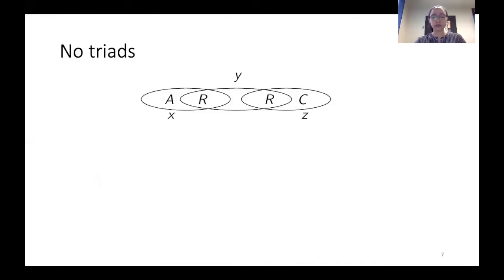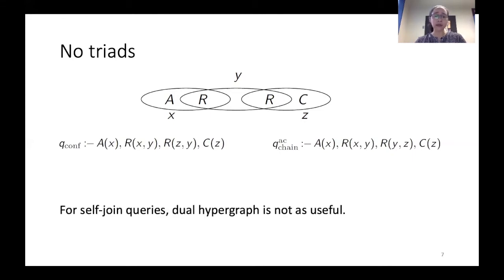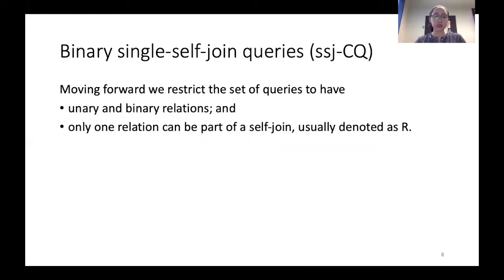Before defining these structures, I want to talk about the representation. We have been representing queries by their dual hypergraph, but something strange happens in the self-join case. Two queries that are different can have the same dual hypergraph. So this representation is ambiguous when considering self-joins and therefore not as useful anymore. We need a new way to represent queries that will differentiate those two queries, because they are indeed different.